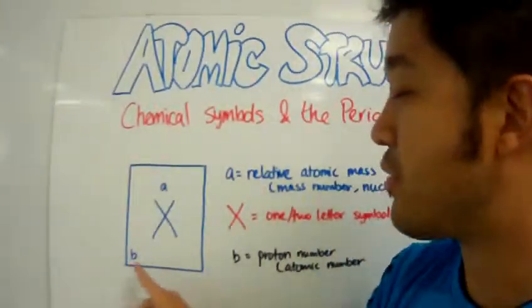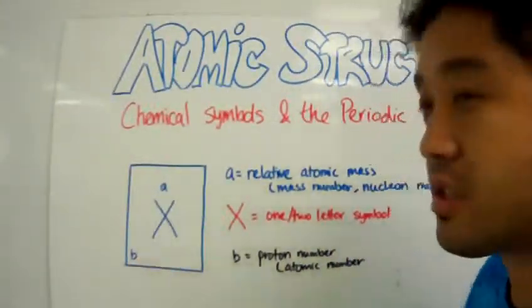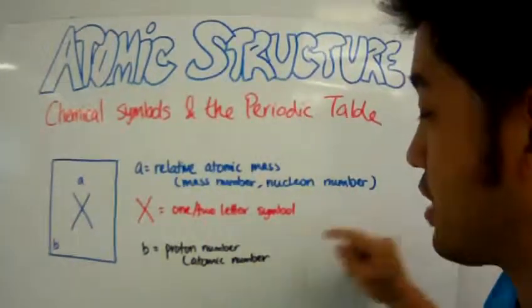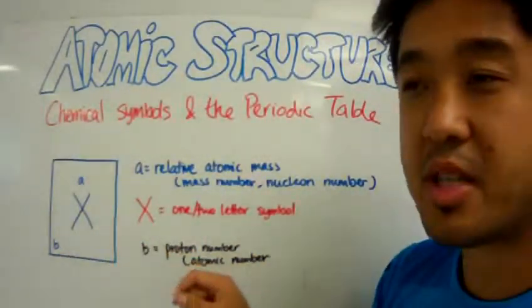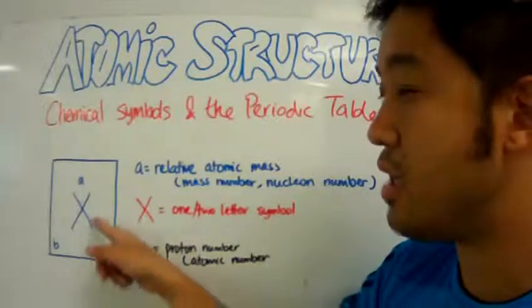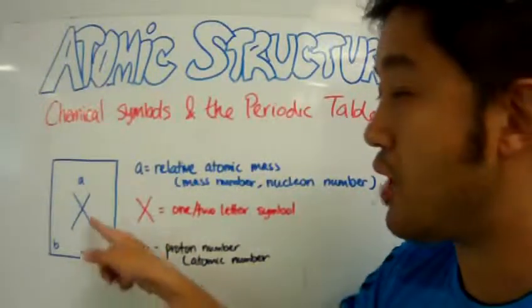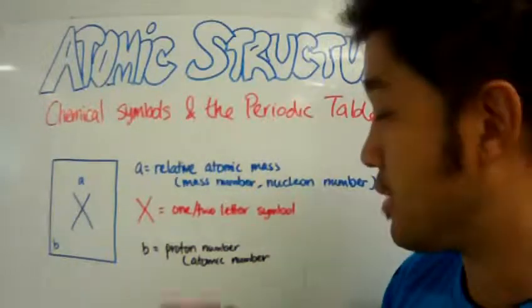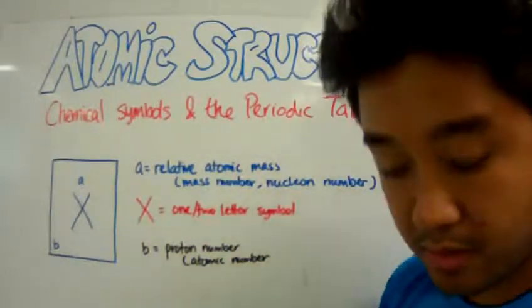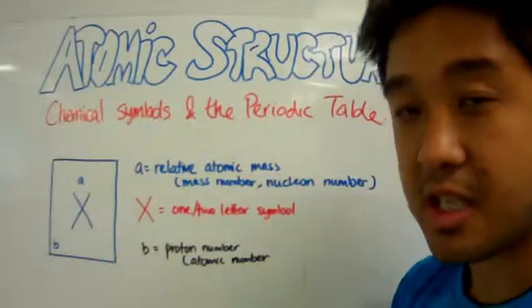And then we have the smaller number. The smaller number is called the proton number. This number represents how many protons there are in that atom. The proton number is also known as the atomic number.